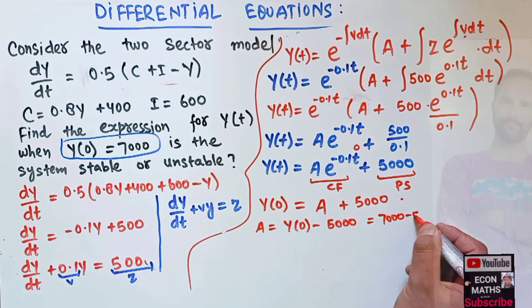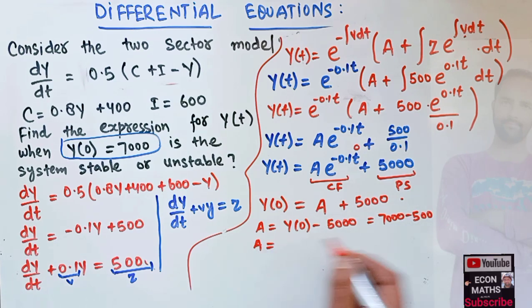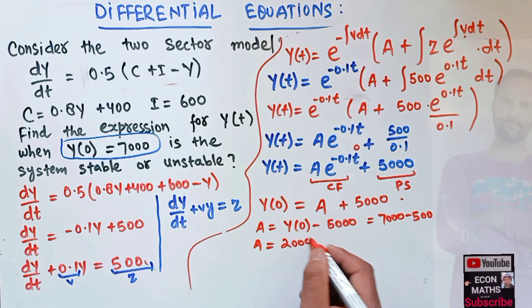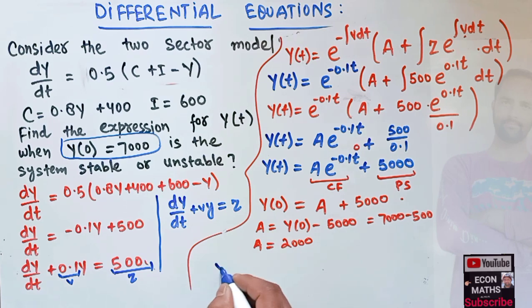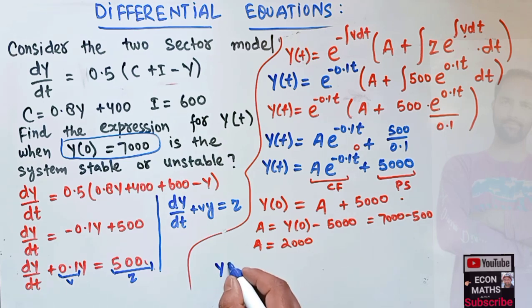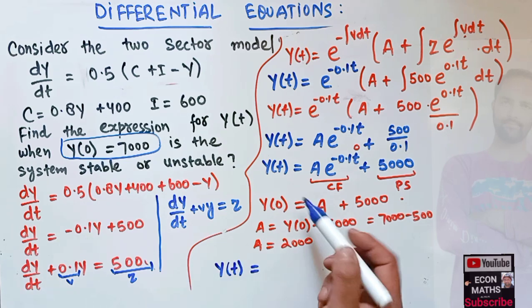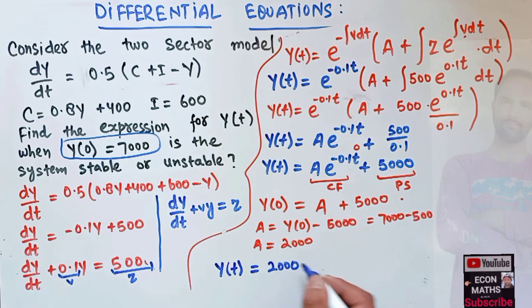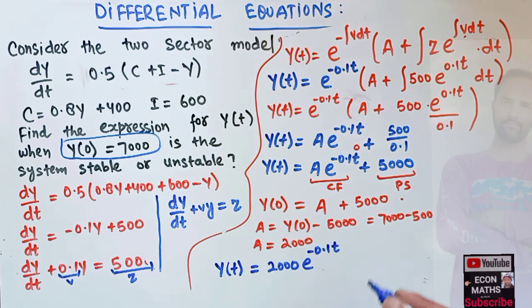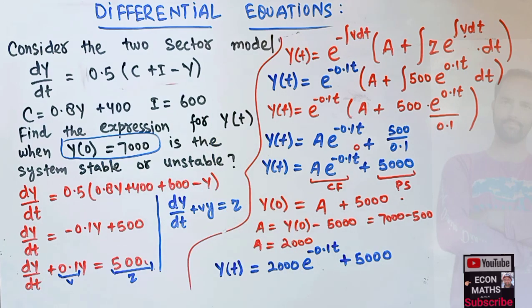Since y(0) = 7000, we get A = 7000 - 5000 = 2000. Therefore the particular solution is y(t) = 2000e^(-0.1t) + 5000.